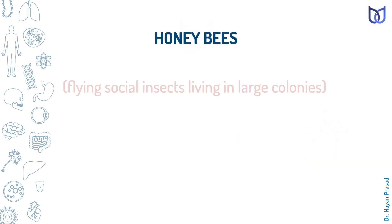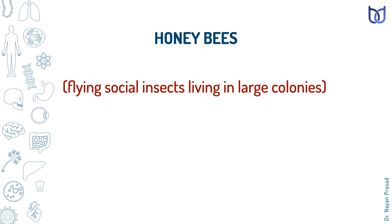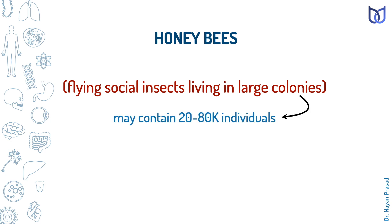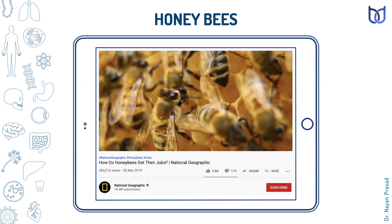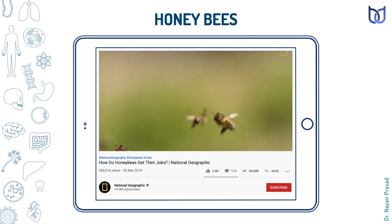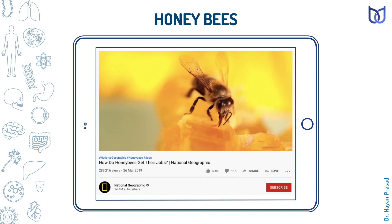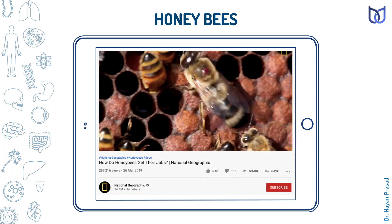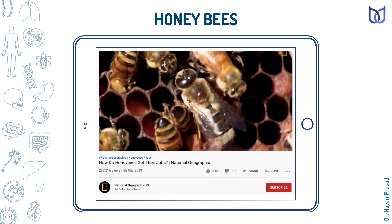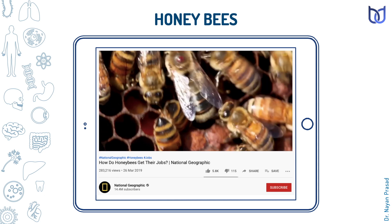Honeybees are flying social insects living in large colonies. A single colony may contain 20 to 80,000 individuals, all offspring of the same mother. Honeybees are always busy, work in coordination, maintain good discipline, and show division of labor. They feed upon pollen and nectar of flowers, play a great role in pollination, and produce and store honey. They prepare their beehive using beeswax.